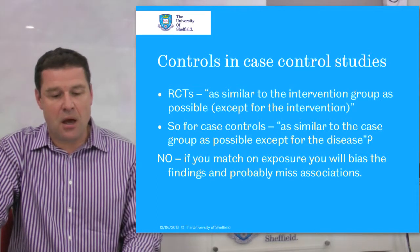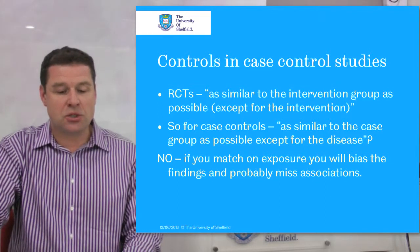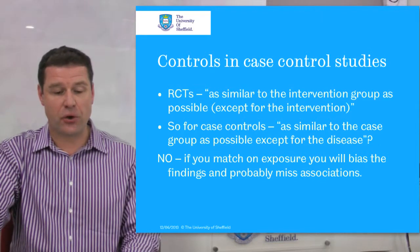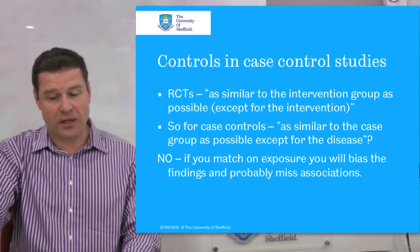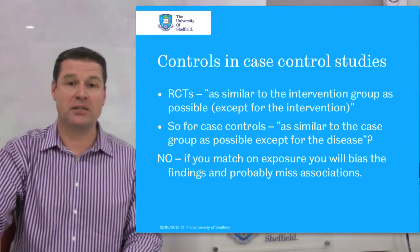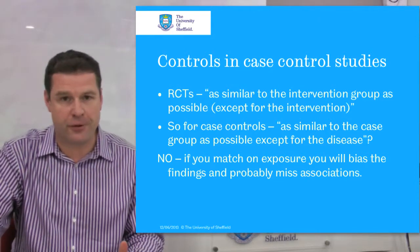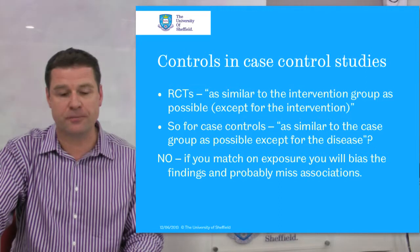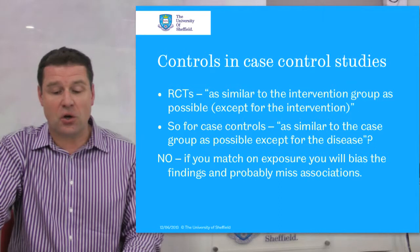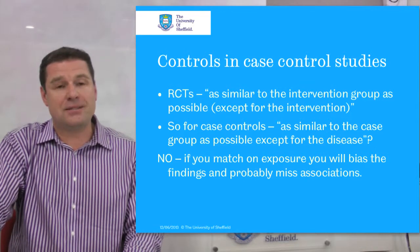A factor that's often misunderstood in case control studies is the control group. In randomized control trials, a control group should be as similar as possible to the intervention group except for the intervention, so that when you see the impact of an intervention you can be confident it is the intervention causing the difference, rather than any difference between the groups. Should the same apply to case controls — should the control be as similar to the case group as possible, except for the disease? The answer is no.